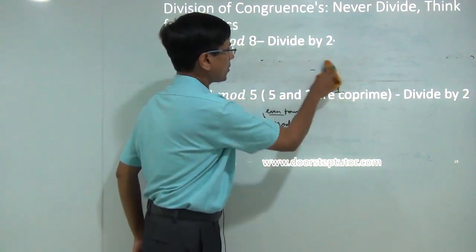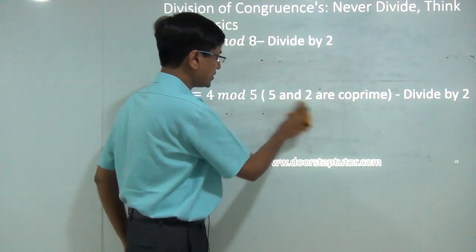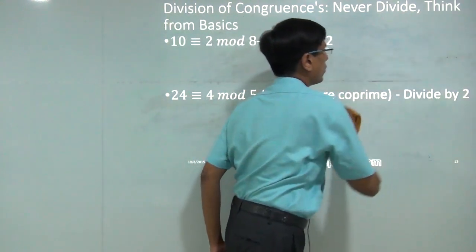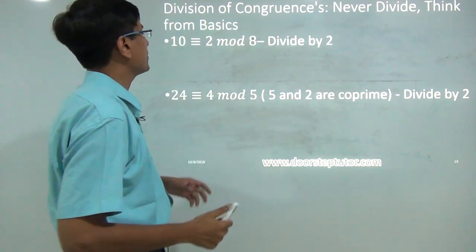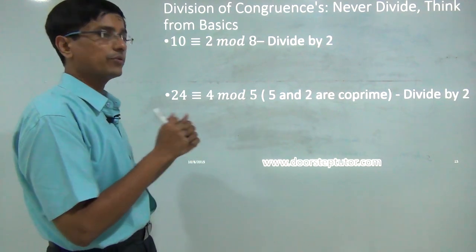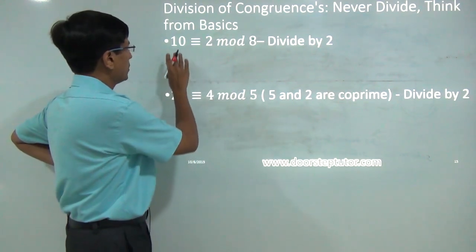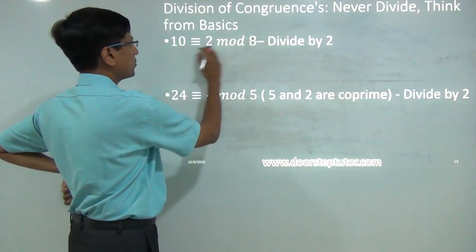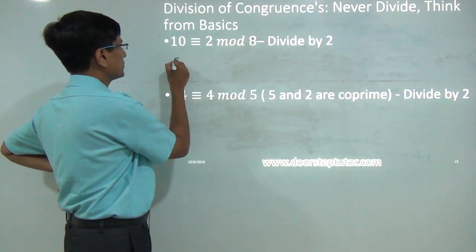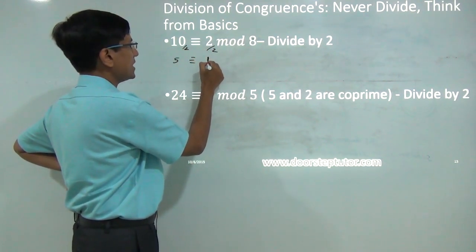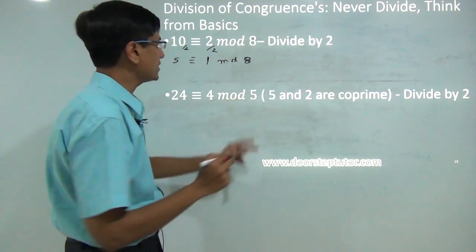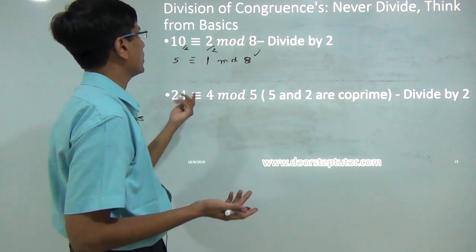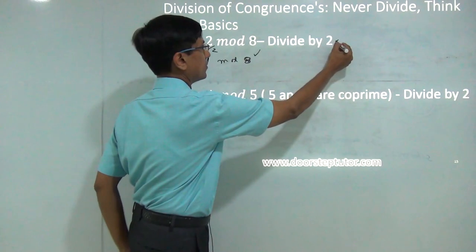There is also a division property of congruence, covered here for completeness. Division does not work straightforwardly. For example, if I have 10 ≡ 2 (mod 8) and divide by 2, I cannot simply write 5 ≡ 1 (mod 8) — this is incorrect because 5 divided by 8 does not leave remainder 1. So division does not always work directly.